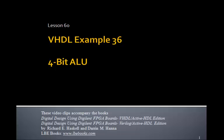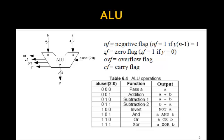This is Lesson 60, VHDL Example 36, where we'll implement a 4-bit ALU. You remember this ALU from the last lesson, where we have an ALU Select 3 bits, which picks out one of several arithmetic or logic operations to implement.